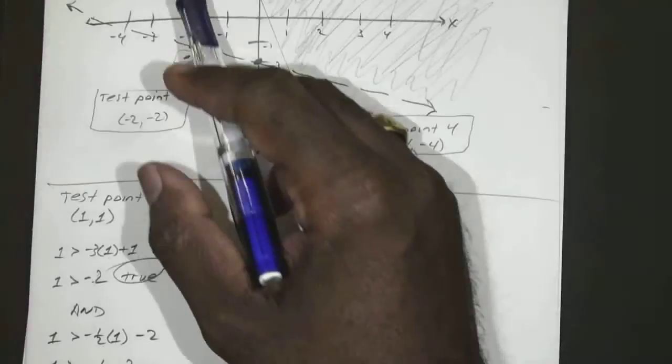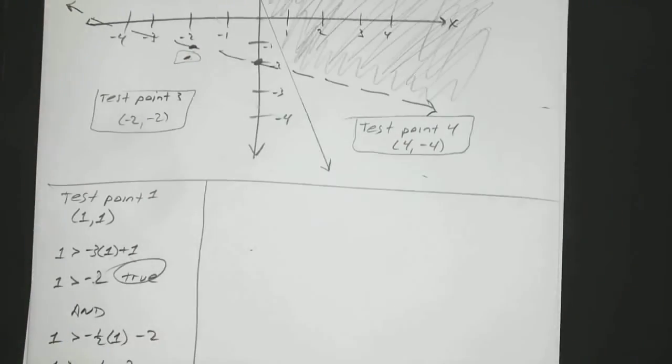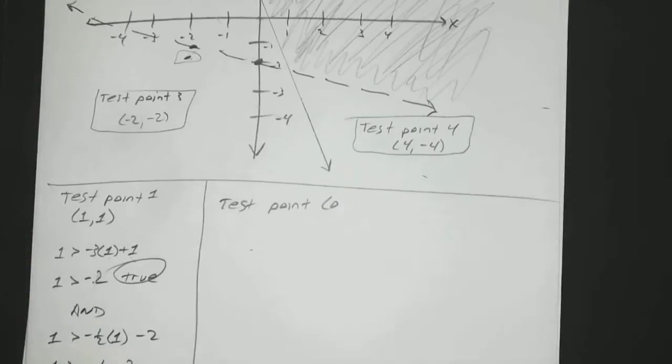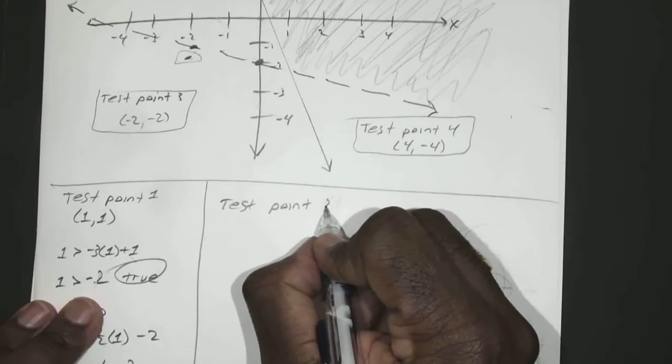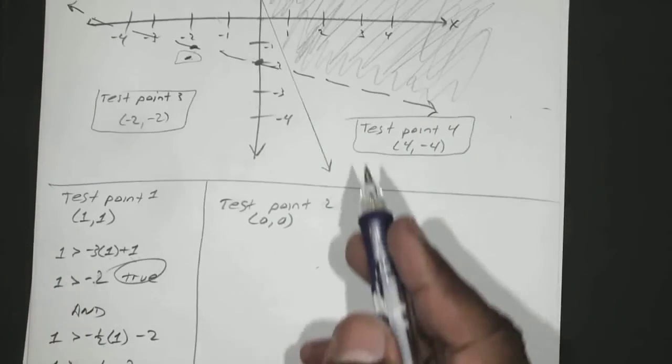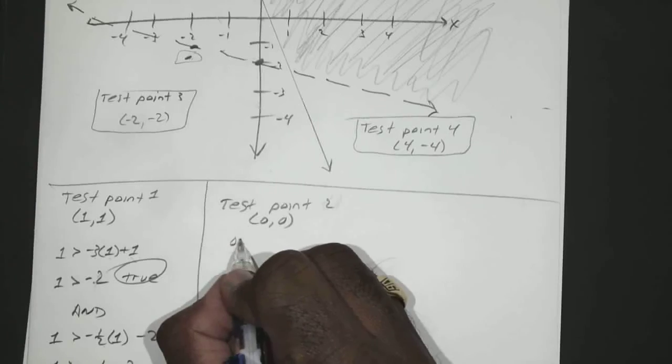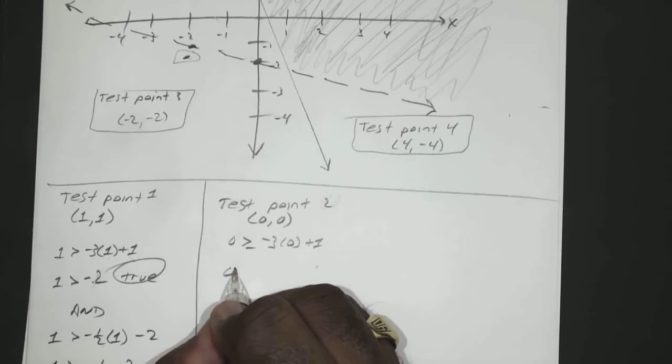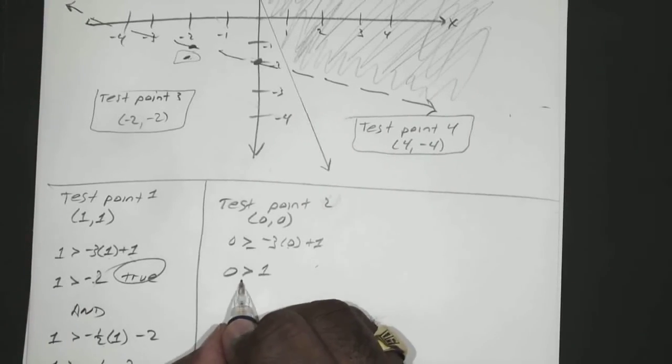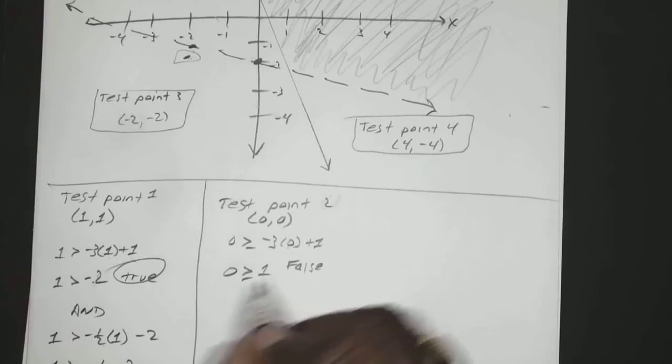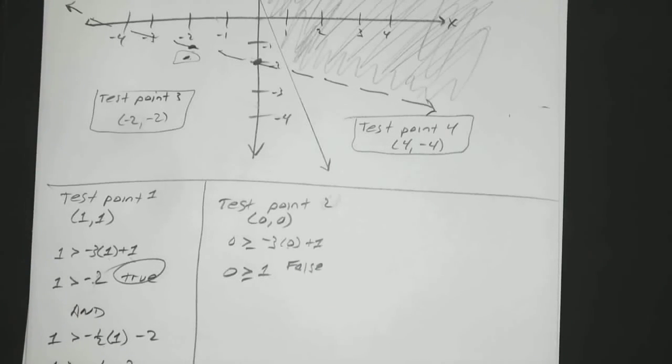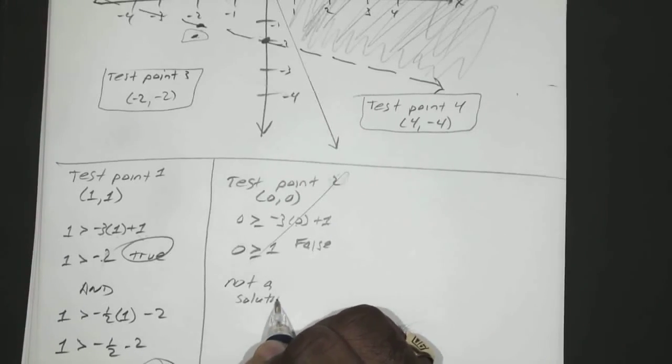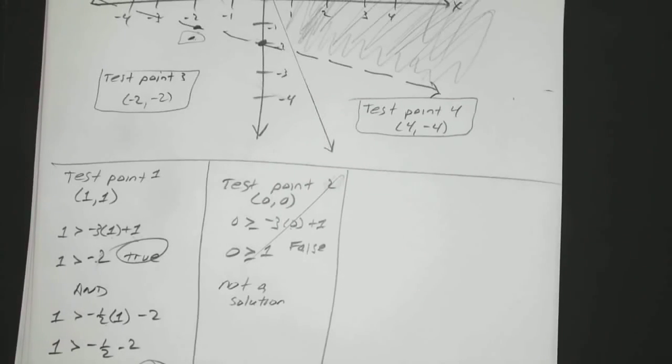So you just shade that section in. Now we try the point for 0, 0. Oh, put that underneath it. That's 0.2 0, 0. Okay? So we have 0s greater than or equal to negative 3 times 0 plus 1, which gives you 0s greater than 0 plus 1, which is false. And the minute you get a false, you can just ignore. You don't have to do both. Not a solution.